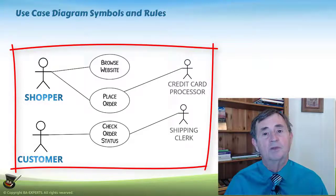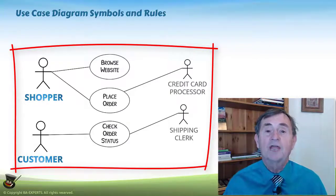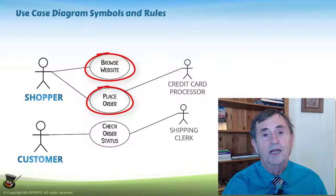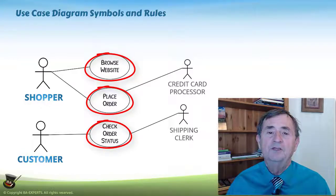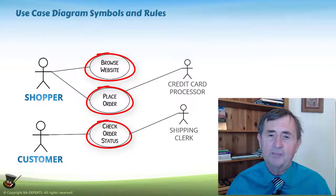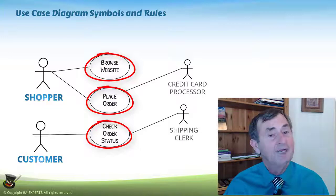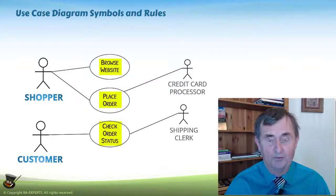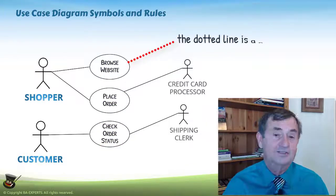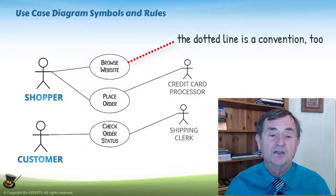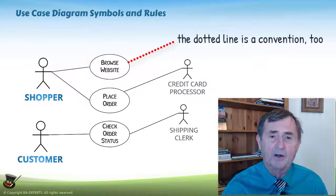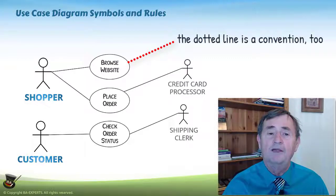On a Use Case Diagram, the first symbol you're going to see is a thing called a Use Case. Here are three examples: Browse Website, Place Order, and Check Order Status. By convention, we represent a Use Case using an oval. It's very important to use an oval because a circle, in the world of UML, has a very different meaning. The oval indicates that this is a Use Case, and the name is written inside the oval. A dotted line is used to indicate that a comment is related to a specific object on the diagram.